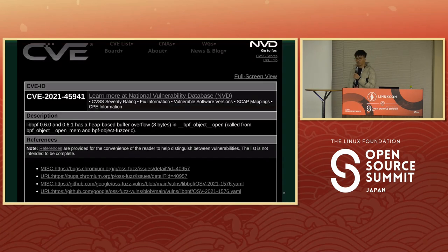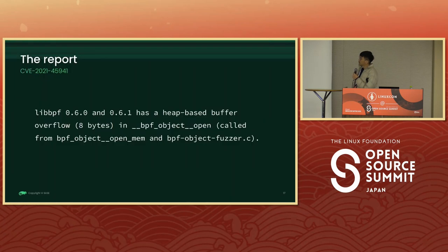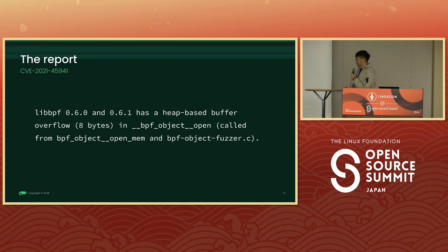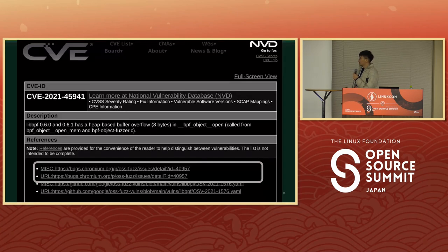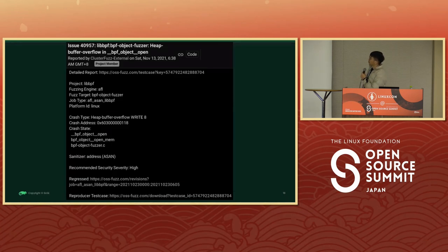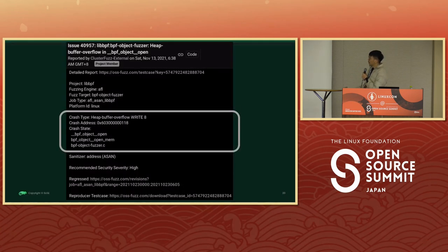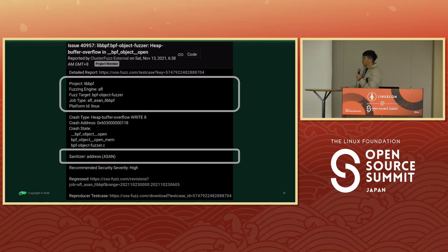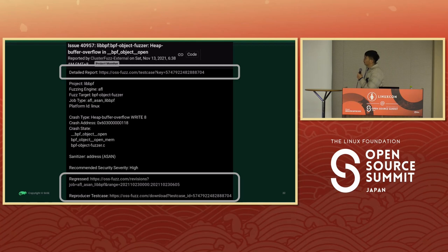The first thing I check out is the CVE description. It says that libbpf version 0.6 has some buffer overflow in the BPF object open function. That is quite specific, but not enough for me to fix the issue. So I keep on looking. There's a reference section in the CVE report. I followed that link, and it brings me somewhere else. I can see some information I already know, but also some new information I don't yet understand, and also a few links to this website called OSS-Fuzz.